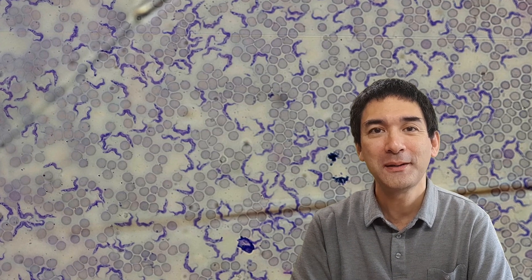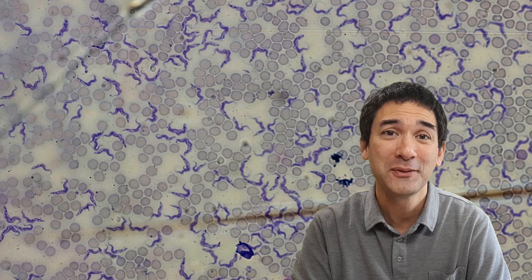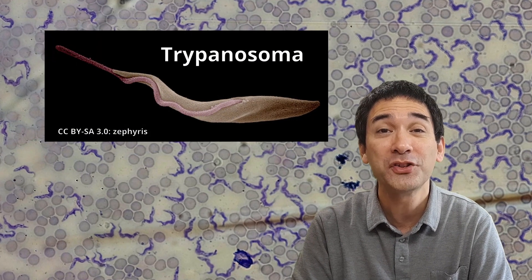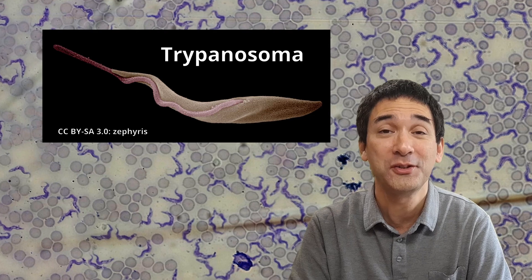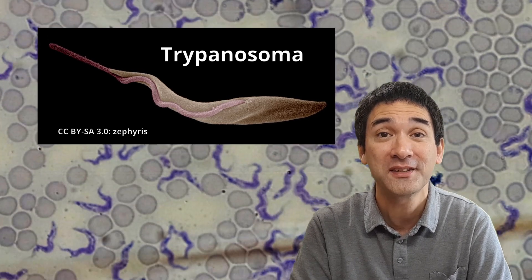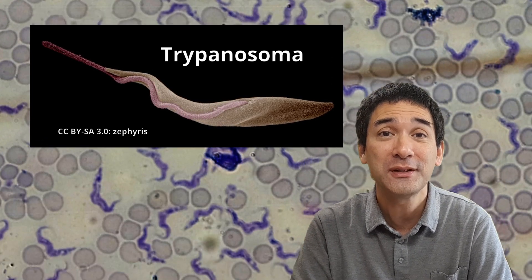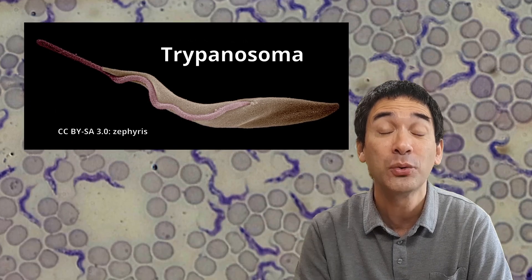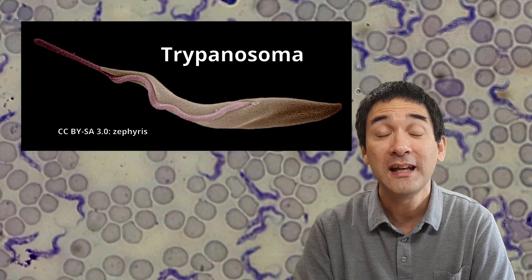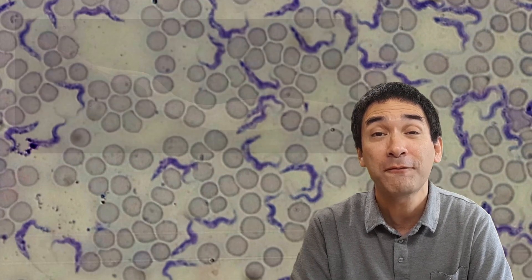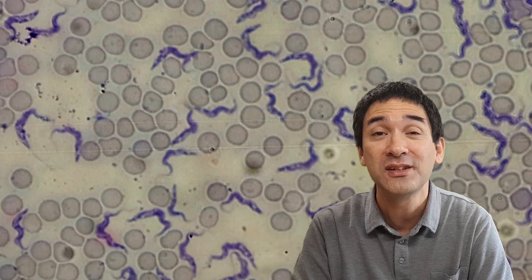This is blood under the microscope, and you might notice something unusual — those bluish squiggly lines. These are known as trypanosomas, and trypanosomas are parasites. They're protozoans that reproduce inside the blood of humans and animals who are infected, and they cause African sleeping sickness, a disease which you don't want to get.